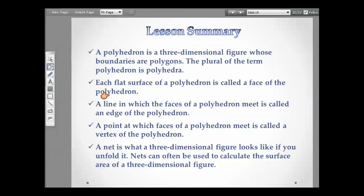Our lesson summary: a polyhedron is a three-dimensional figure whose boundaries are polygons. The plural of the term polyhedron is polyhedra. Each flat surface of a polyhedron is called a face of the polyhedron. A line in which the faces of the polyhedron meet is called the edge of the polyhedron. A point at which faces of the polyhedron meet is called the vertex of a polyhedron. And a net is what a three-dimensional figure looks like if you unfold it. Nets can often be used to calculate the surface area of a three-dimensional figure.